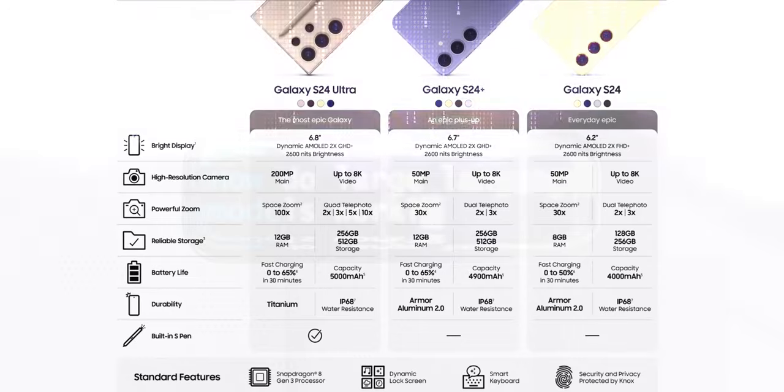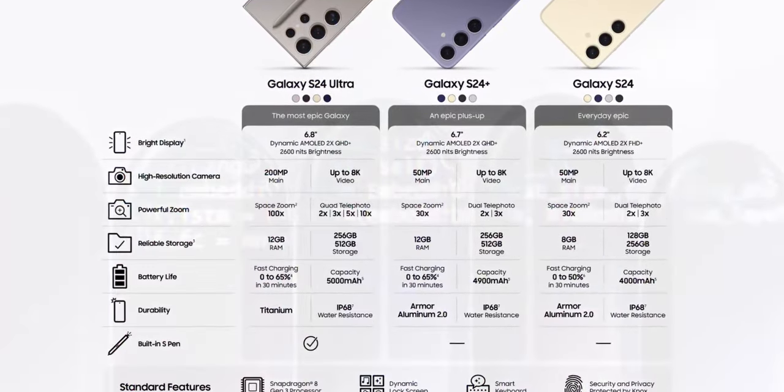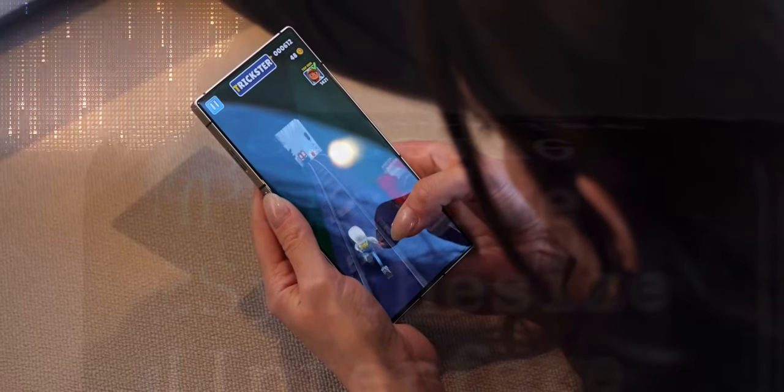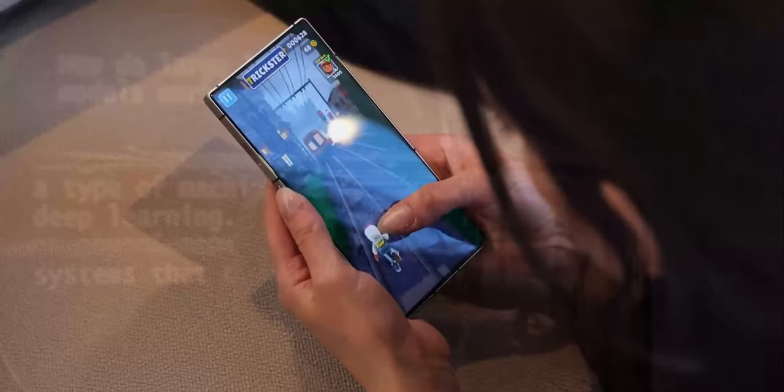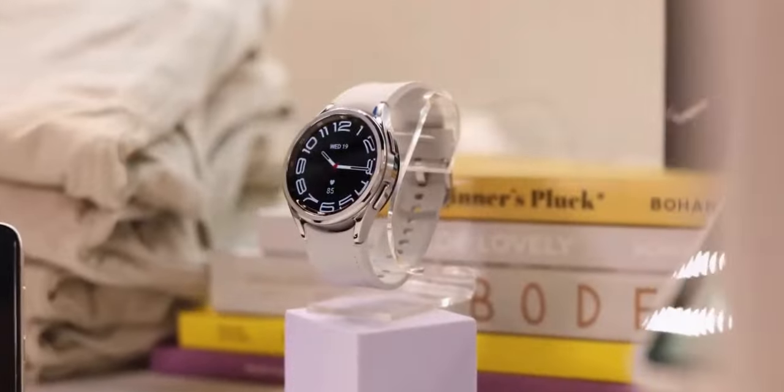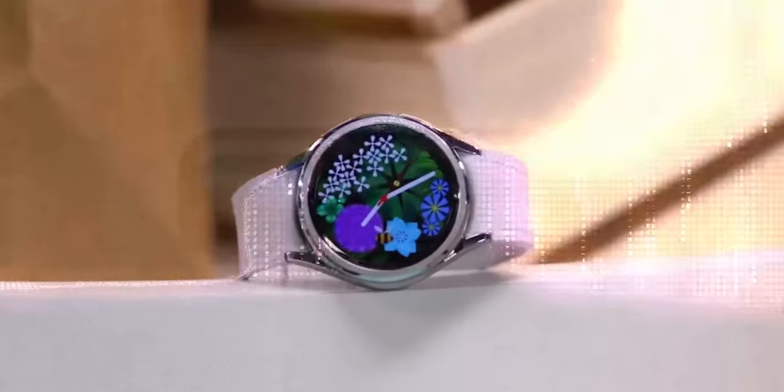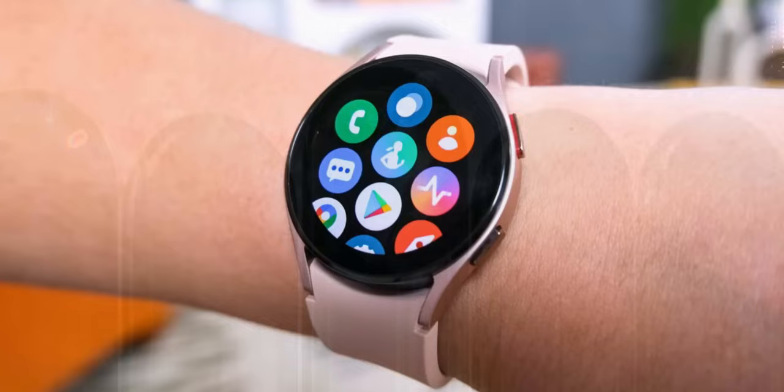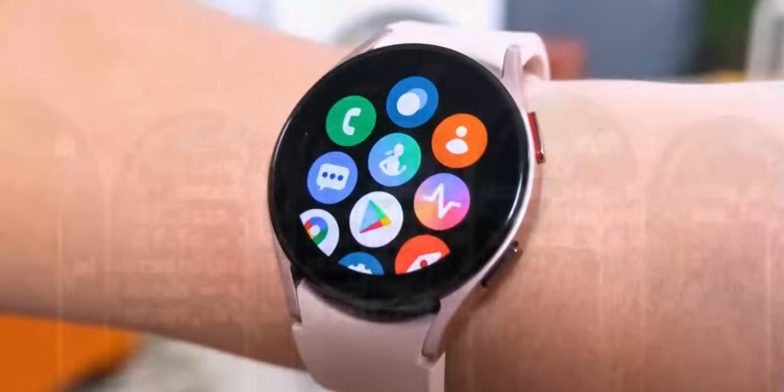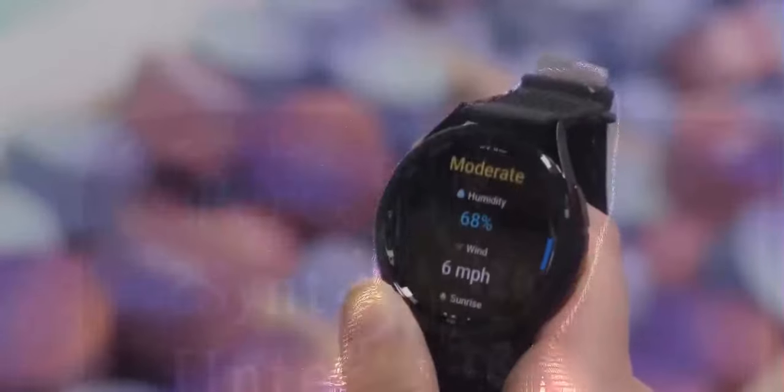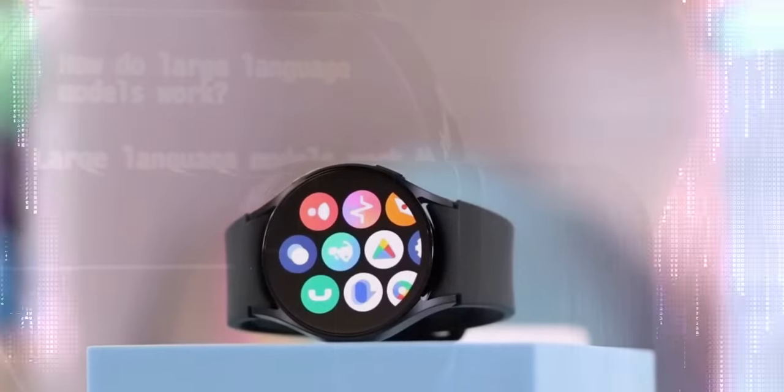However, it does mean that standard glass screen protectors can finally be used on the Ultra without the need for adhesive. The display will have a higher brightness of 2600 nits, but will retain the same 6.8-inch 1440 by 3088 pixel 120Hz Dynamic AMOLED 2X QHD Plus panel from the Galaxy S22 Ultra.